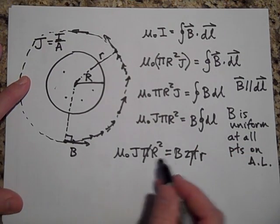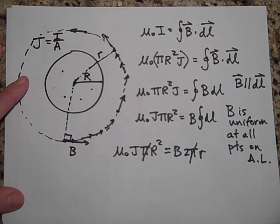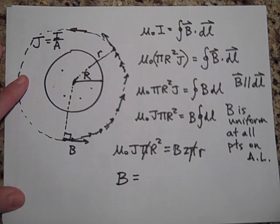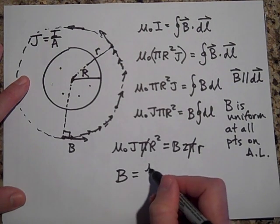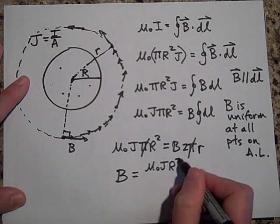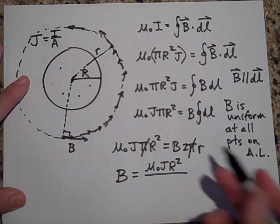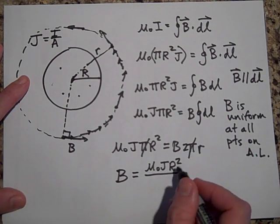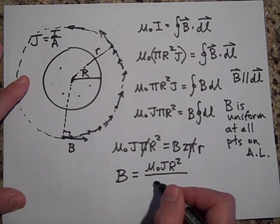And so it looks like B is equal to μ₀JR² squared, which is just a constant. R squared is just a constant, divided by 2r.